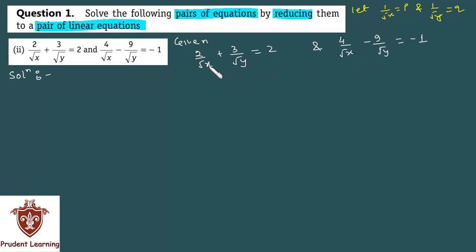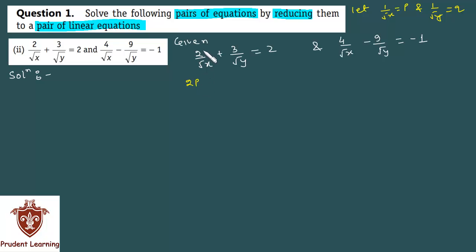Where we have 1 by root x, we put p, and where we have 1 by root y, we put q. So the x and y terms will be replaced by p and q. For the first equation, this will be 2p, because it is 2 times of 1 by root x.